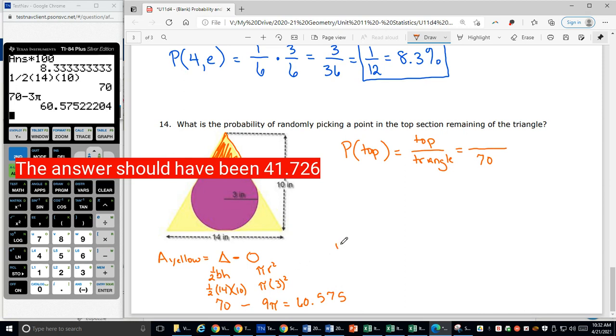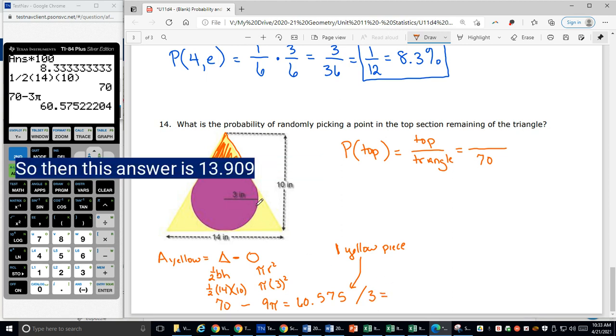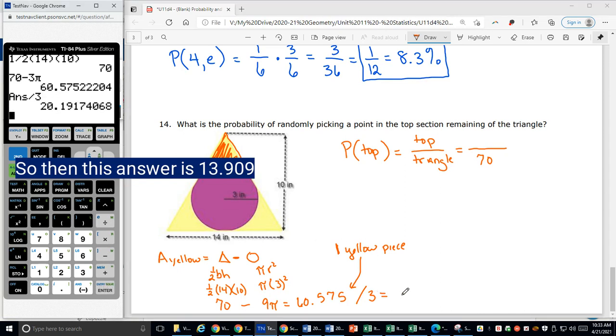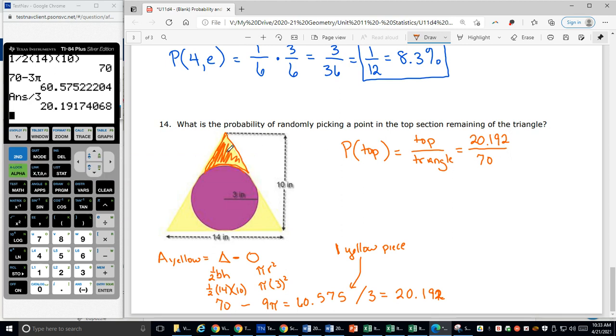If I want one yellow piece, I'm going to take this number and divide by three, right? Because I need to divide it into three equal pieces. So I'm going to take this number and I'm just going to tell the calculator, divide that please by three. And I get 20.1917. So I'll change this to 20.192, I'm rounding it. That's the area of just this top portion.